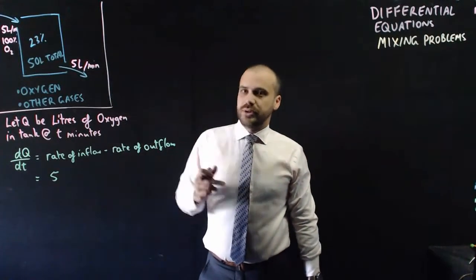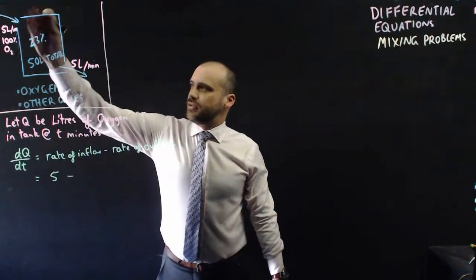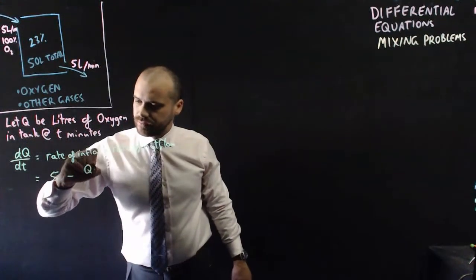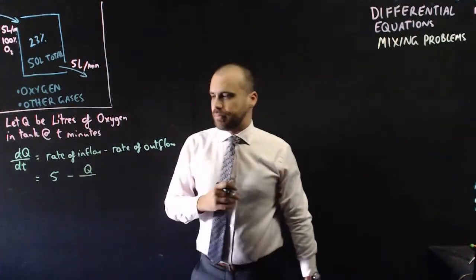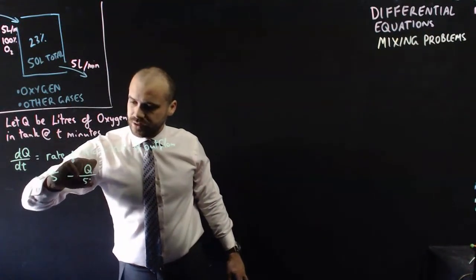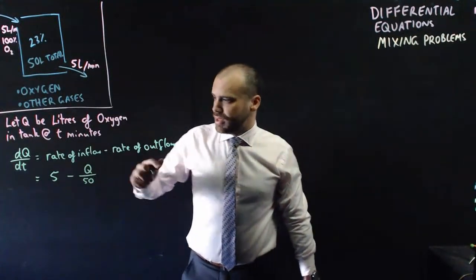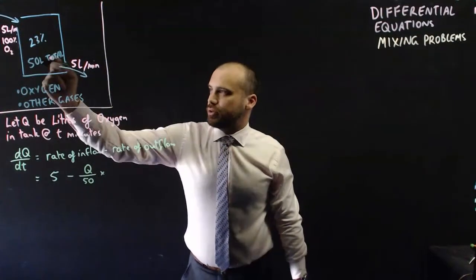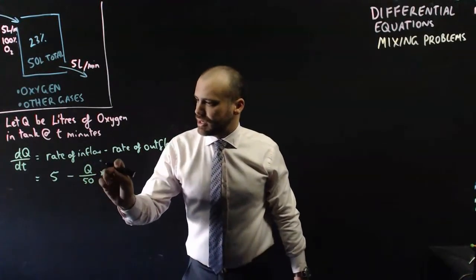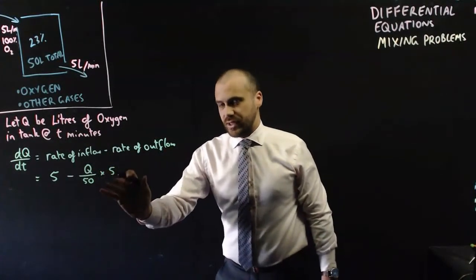All right, what about the rate of outflow? Well, that's trickier, but we can still work it out. It's going to be equal to the amount of oxygen in the tank, and Q is the amount of oxygen in the tank, divided by the total amount that the tank holds, divided by 50. So this is just the percentage of oxygen in the tank, right? Multiplied by... Now, we know that the gas is coming out at 5 litres per minute. So this is the percentage that's in the tank. If we multiply it by 5, we'll know how much oxygen is coming out of the tank at that time.